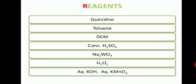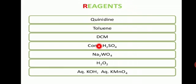Reagents used in microwave organic synthesis include: quinoline, collidine, DCM (dichloromethane), concentrated sulfuric acid, sodium tungstate, hydrogen peroxide, aqueous potassium hydroxide, and aqueous potassium permanganate. These reagents help reduce or eliminate the use or generation of hazardous substances in the design, manufacture, and application of chemical products, making them important for microwave organic synthesis.